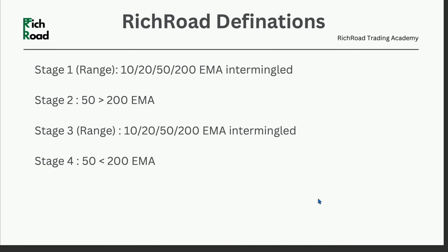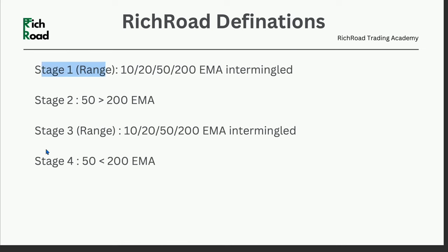Let me cover the very basics of rich road definitions. We don't use stage one and stage three — instead we simply say you are in a range. In a range, the 10, 20, 50, and 200 moving averages are intermingled together most of the time. At times 10, 20, and 50 are intermingled while there is a distance from the 200 — if that distance is not too large, it is still a range. For stage two, you need the 50 above the 200 and the 200 has to be upsloping. Whatever is explained for stage one goes for stage three as well, and stage two inverted gives you stage four.